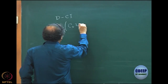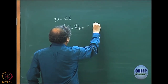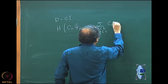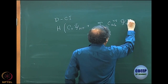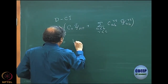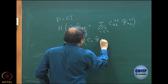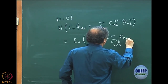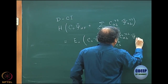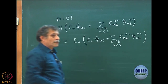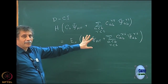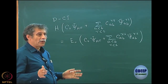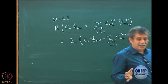H acting on C0 times psi Hartree-Fock plus a sum over a less than b. We are writing only doubles — no singles — because doubles are the first important terms. This is what is called truncated CI, which means I have truncated the CI expansion only to doubles. It is not a full CI; it is not exact even in the m-dimensional basis.